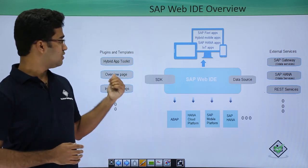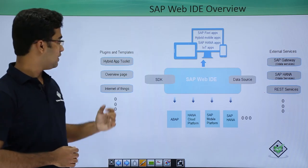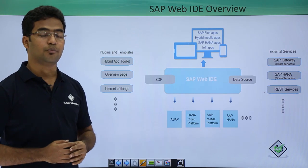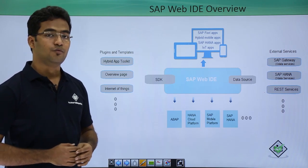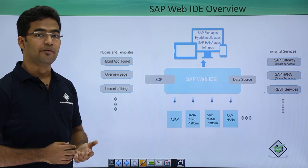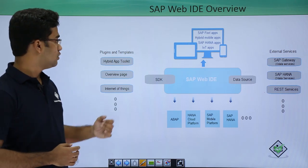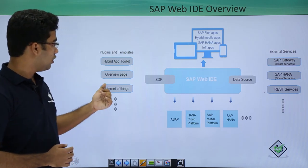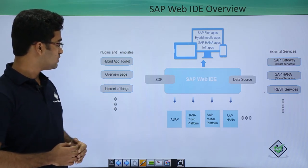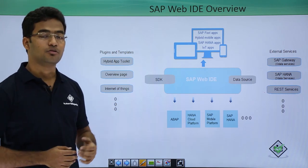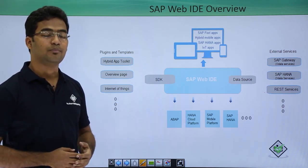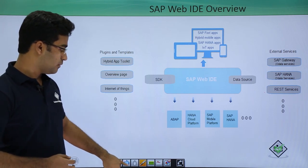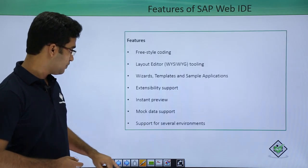We can also use plug-ins and templates in SAP Web IDE — there are plug-ins and templates available. If we are making a particular project in SAP UI5, we can always use a predefined template and also use plug-ins. We have a plug-in called HAT, which stands for Hybrid App Toolkit, and we also have template overview pages and a plug-in for Internet of Things. Similarly there are multiple plug-ins and templates available. This was the simple architecture, or basically the overview of SAP Web IDE.